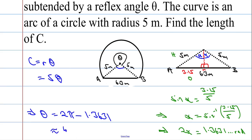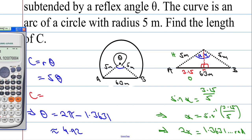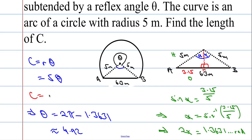Which means that c is going to equal 5 times 4.92. Take my answer, times by 5, which is going to give us 24.6 meters to 3 significant figures. So 24.6 meters to 3 significant figures.